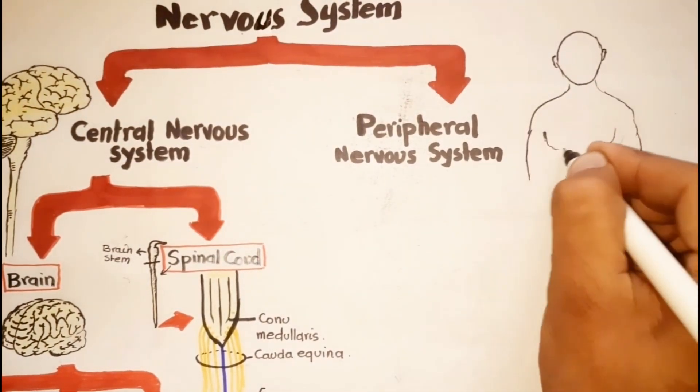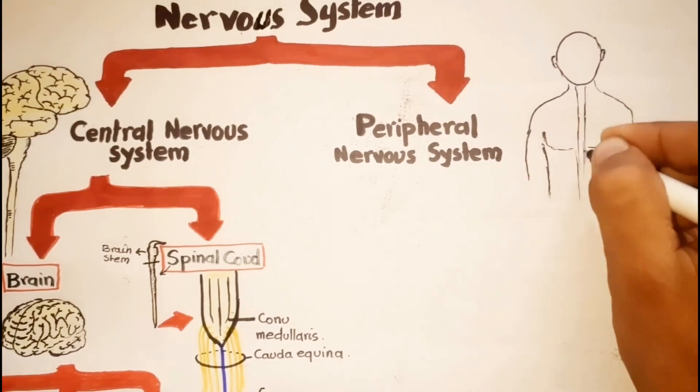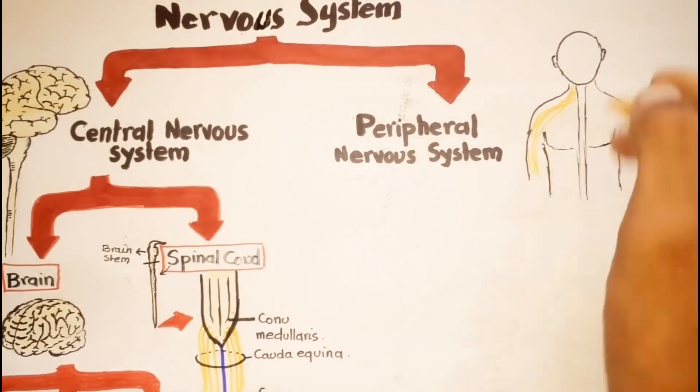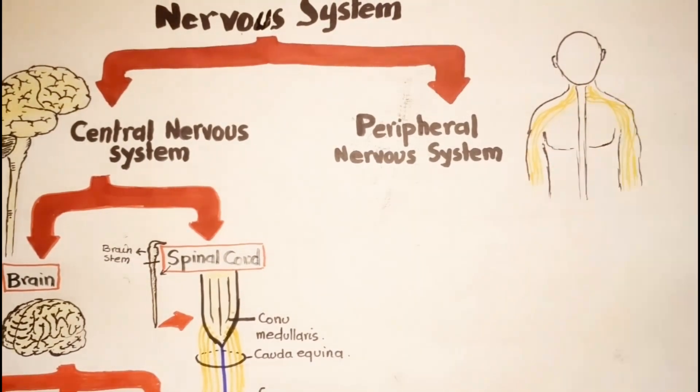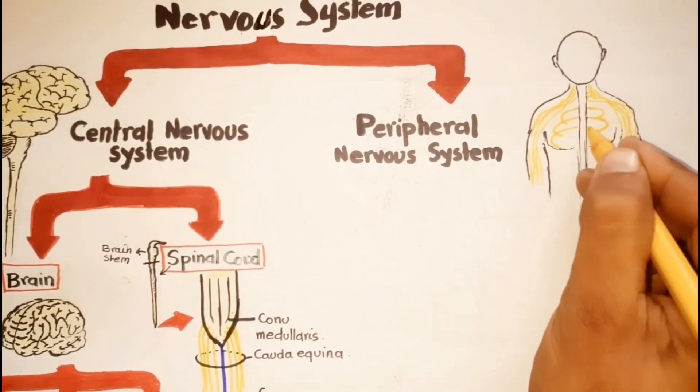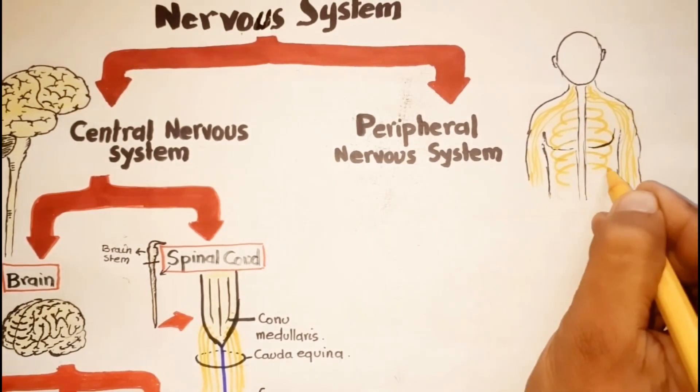The second main division of the nervous system is the peripheral nervous system, which includes neurons located outside the brain and the spinal cord.